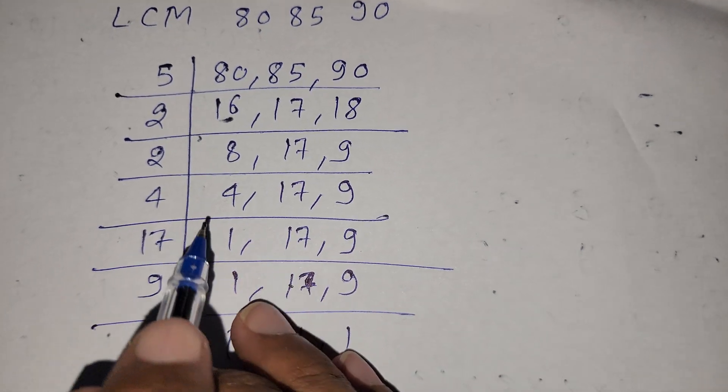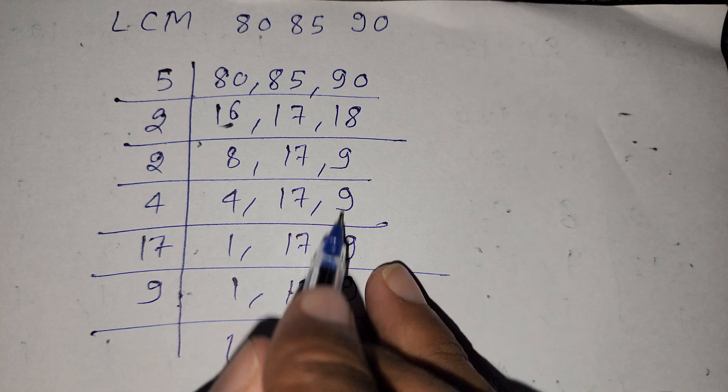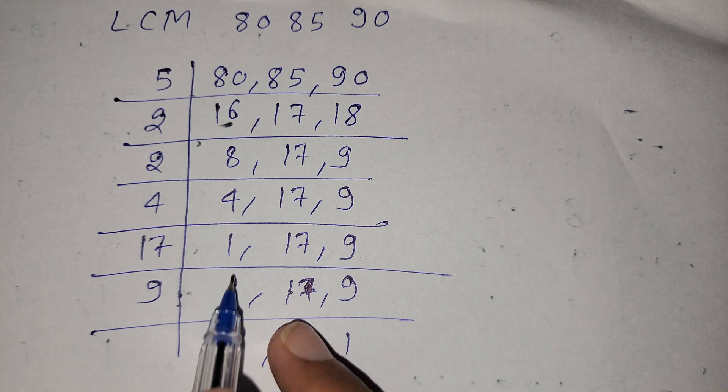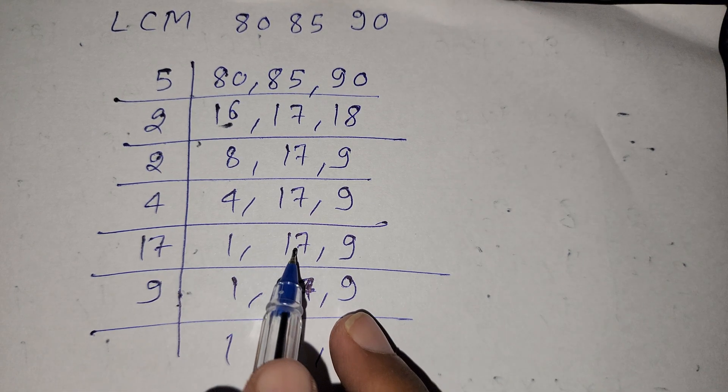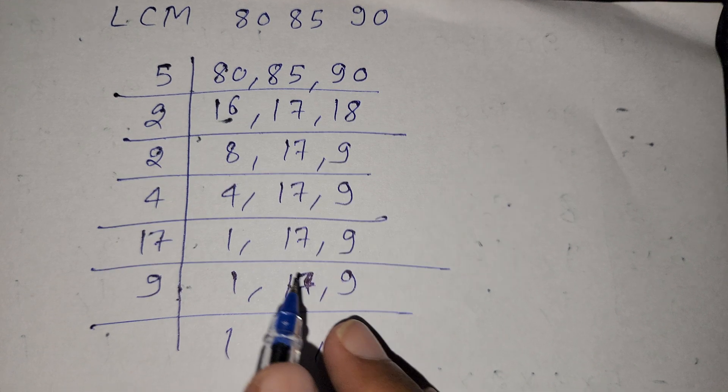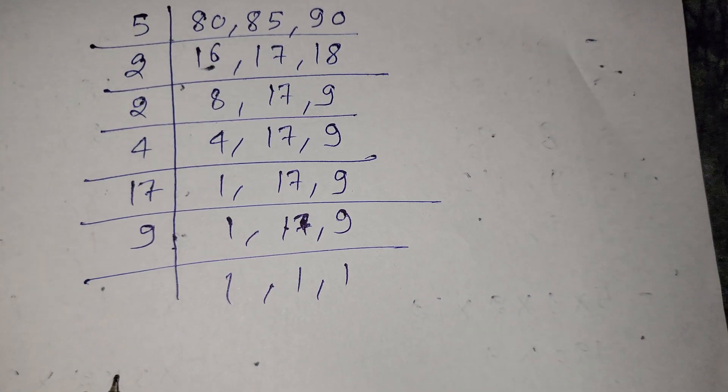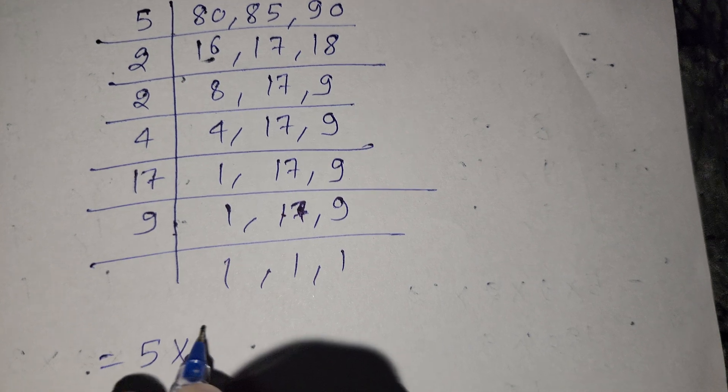Now we divide by 4, so here is 1, 17 as is, and 9 as is. Now we divide by 17: 1 as is, 17 divided once is 1, and 9 as is. Now we divide by 9: 1, 1, 1.